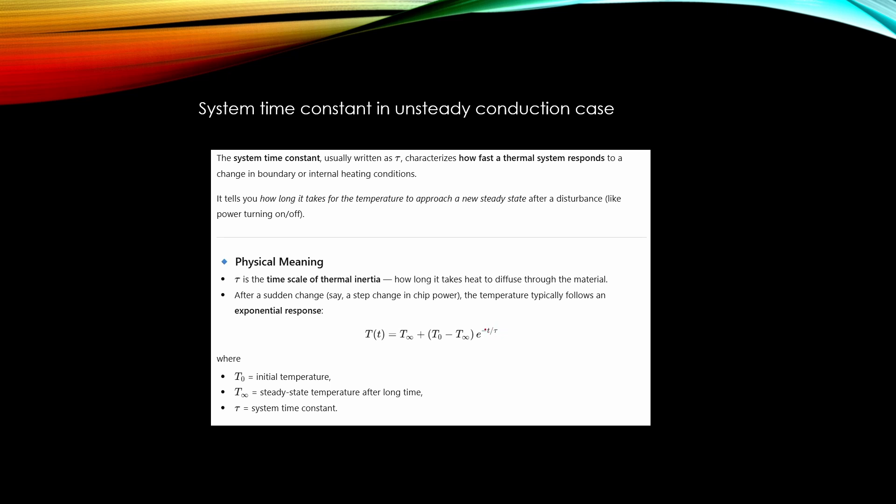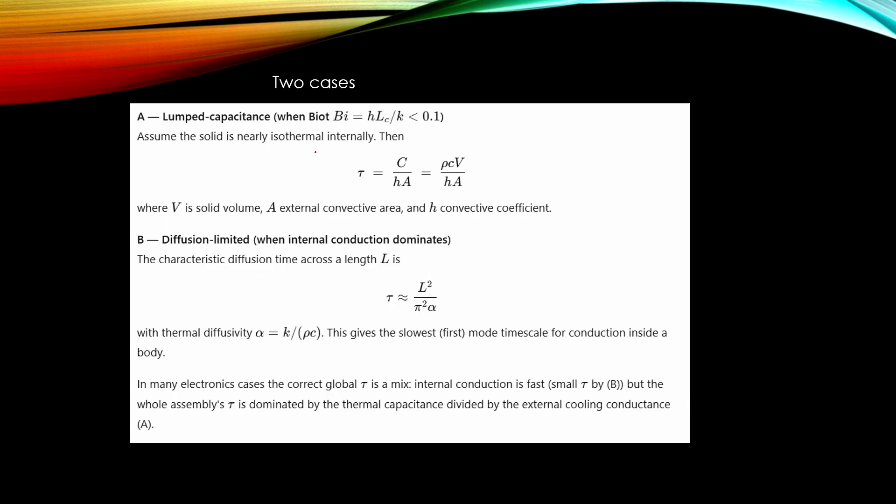Typically the temperature of the body is following this exponential response curve. And here we have this time and this so-called time constant tau. When we are calculating this tau value we can separate two different cases. If so-called Biot number is very small, then this body is nearly isothermal.